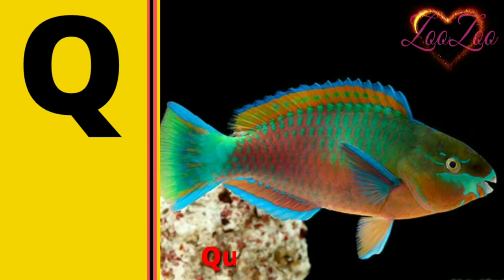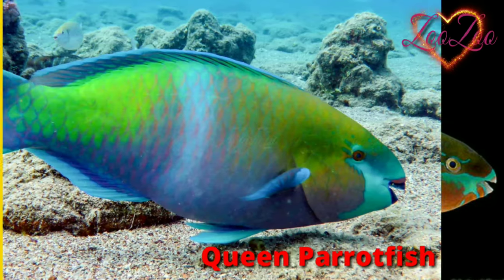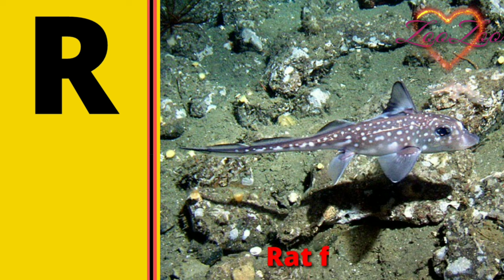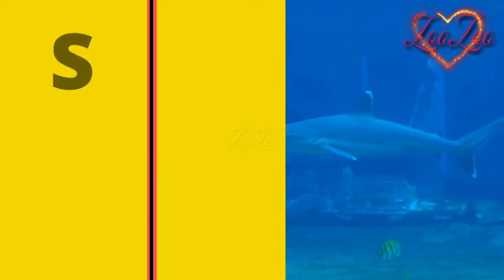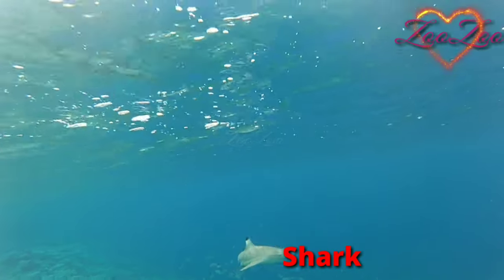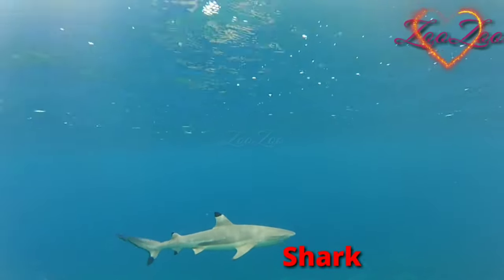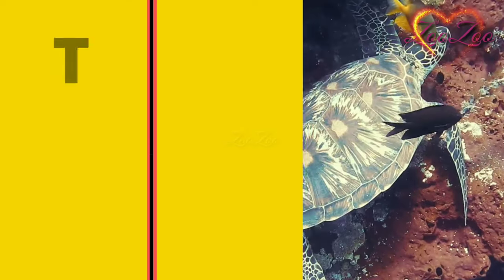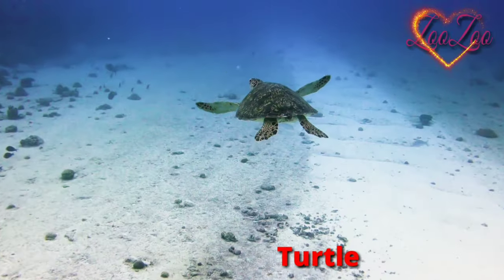Q is for queen parrot fish. R is for rat fish. S is for shark. T is for turtle.